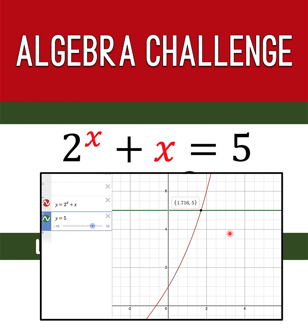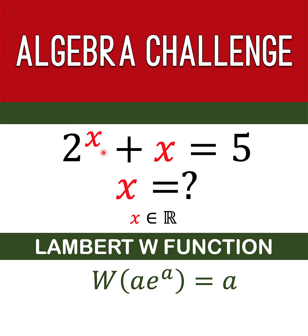But if we want to solve this algebraically, how can we find x equals 1.716 as the solution? That is what I'm going to teach you in this lesson. Our goal is to be able to write the given equation in the form: something times the natural number e raised to that something. And if we take the Lambert W of that expression, the result is that something.